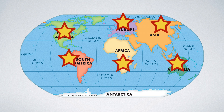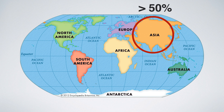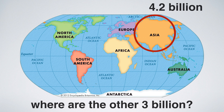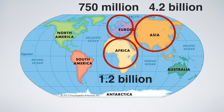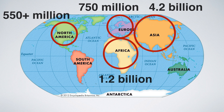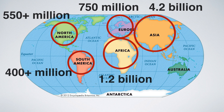You know all these shiny continents we have? More than half the earthlings live in a single one of them. That leaves us with another 3 billion. Where are they? In decreasing order: Africa with 1.2 billion, Europe with 750 million, North America with 550 million, and South America with 400 million. Oh yeah, I almost forgot about Australia — they have 36 million. Population-wise, Australia is not more than a rounding error.